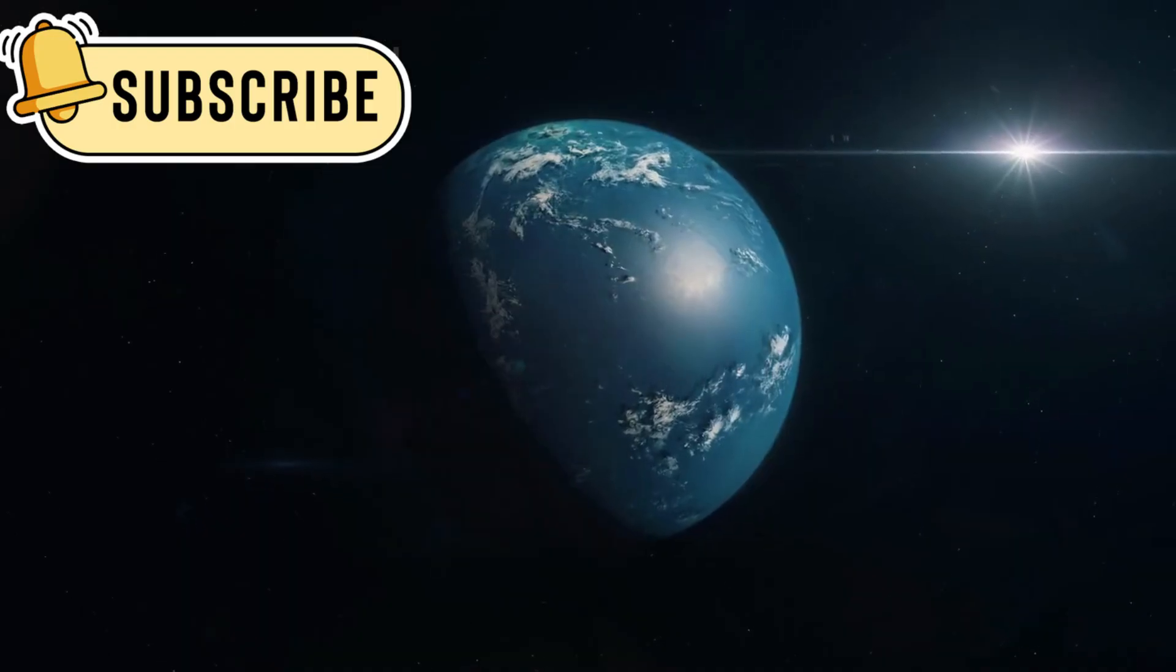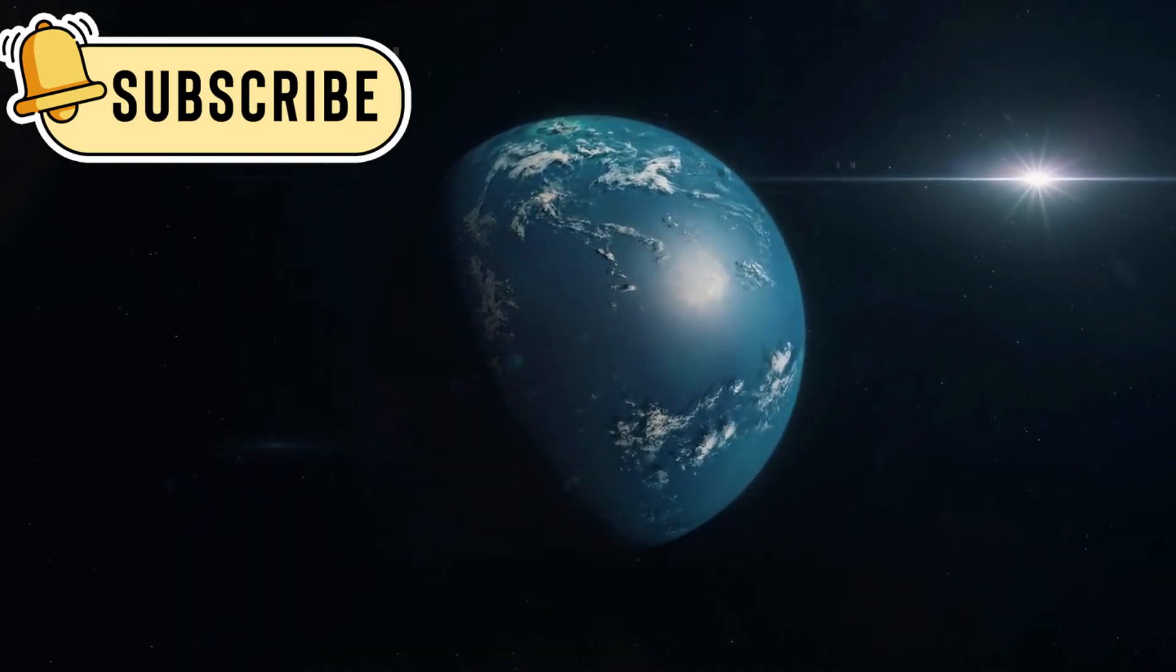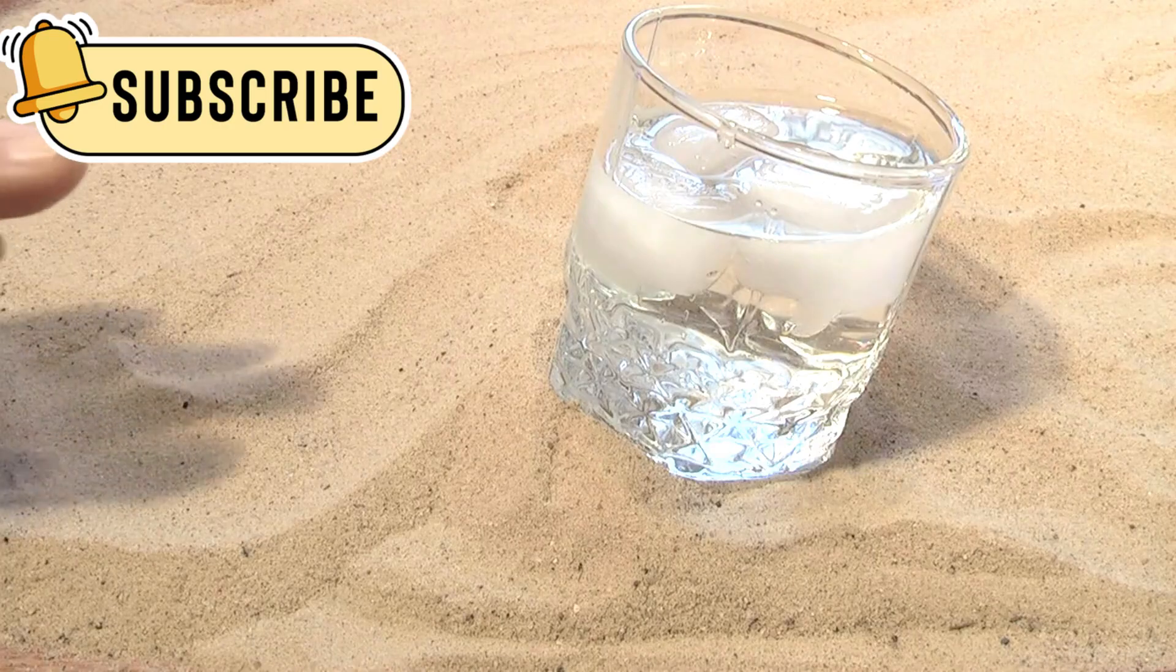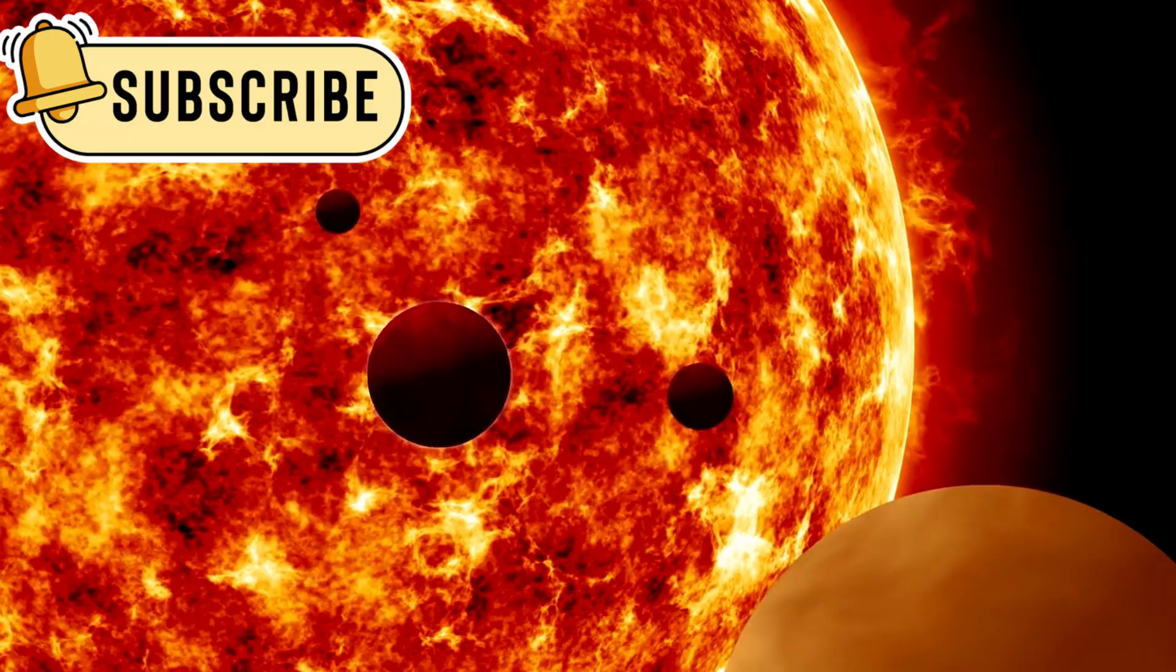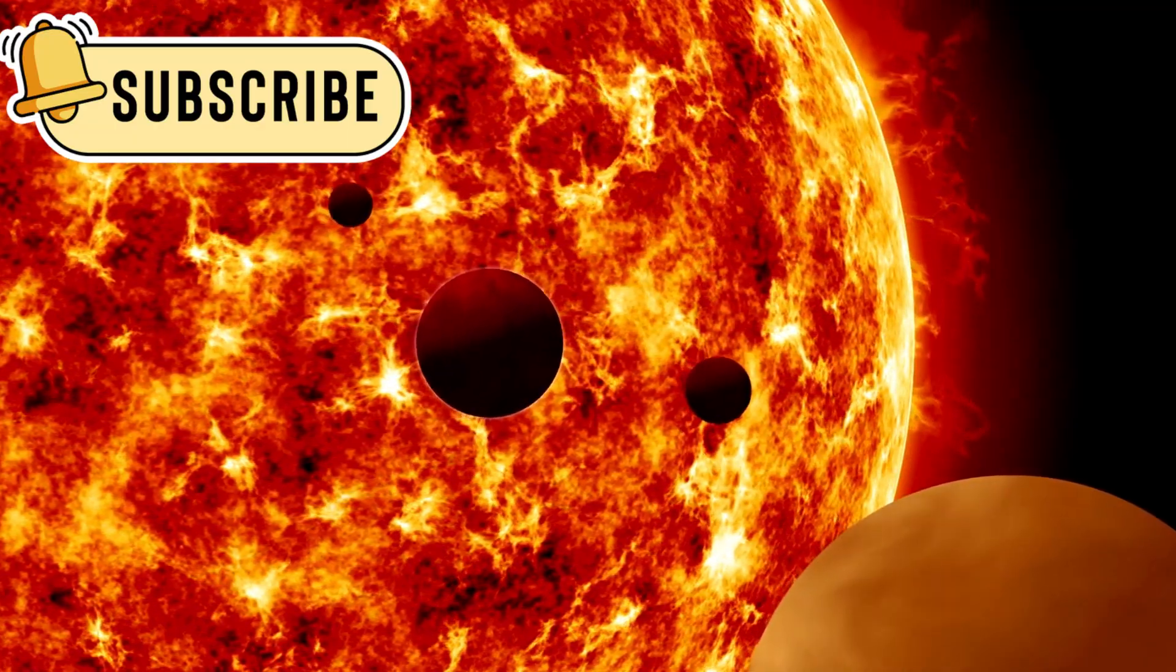Some exoplanets are located in what scientists call the habitable zone. This is the area around a star where temperatures might allow liquid water to exist. Liquid water is one of the most important ingredients needed for life. That's why planets in the habitable zone are very exciting to researchers.